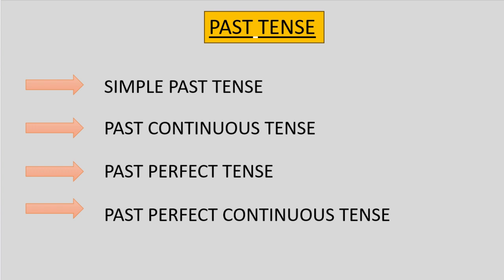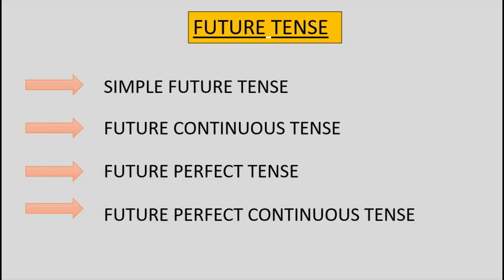Future tense is divided into four types: 1. Simple future tense. 2. Future continuous tense. 3. Future perfect tense. 4. Future perfect continuous tense.